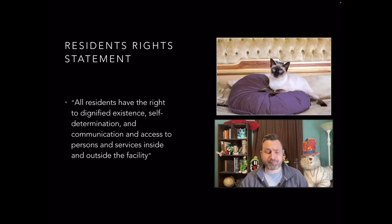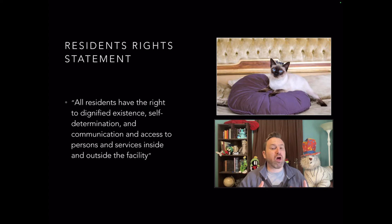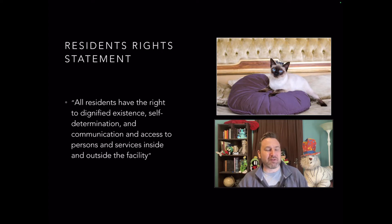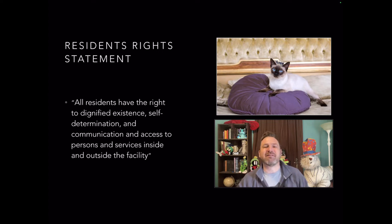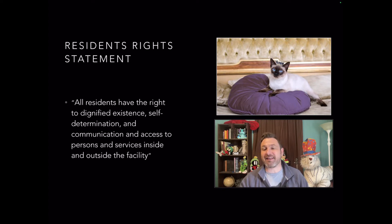So bear that in mind. We're going to go through the resident rights somewhat — not all of them, not bit by bit. We're going to do them in sets because, depending on how you count them, residents have 43 separate rights. The first is the resident rights statement, which is that all residents have the right to dignified existence, self-determination, and communication and access to persons and services inside and outside the facility.